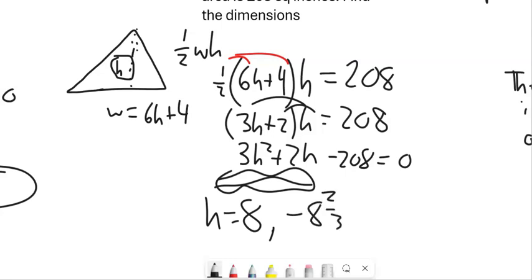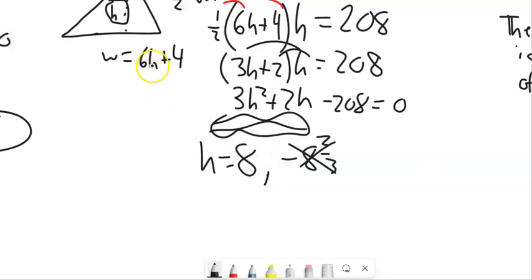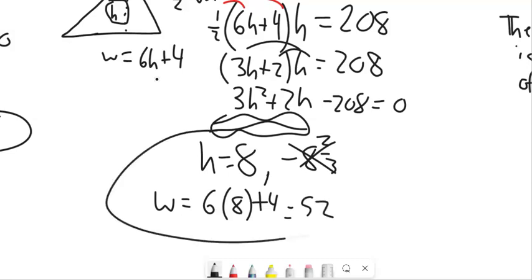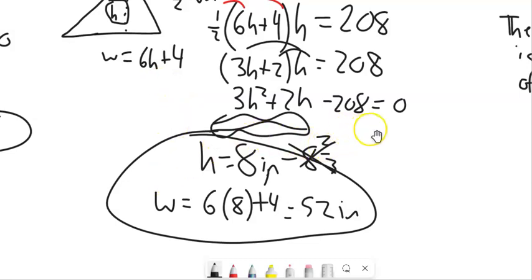And since I'm not going to have a negative height, I'm going to throw that one out. I'm going to keep the 8. So if the height is 8, I can plug it back in for the width. The width is 6 times the height plus 4. That comes out to 52. So there's the dimensions right there. The height is 8, and this is in inches, and the width is 52 inches. And I can check it, right? 8 times 52, cut that in half, and I get 208.